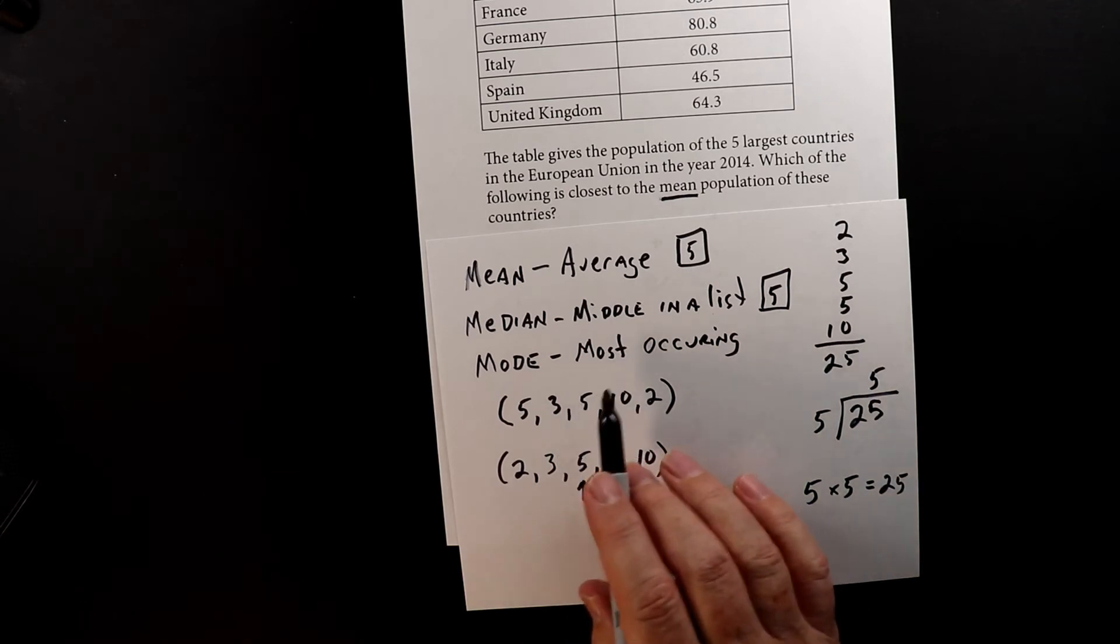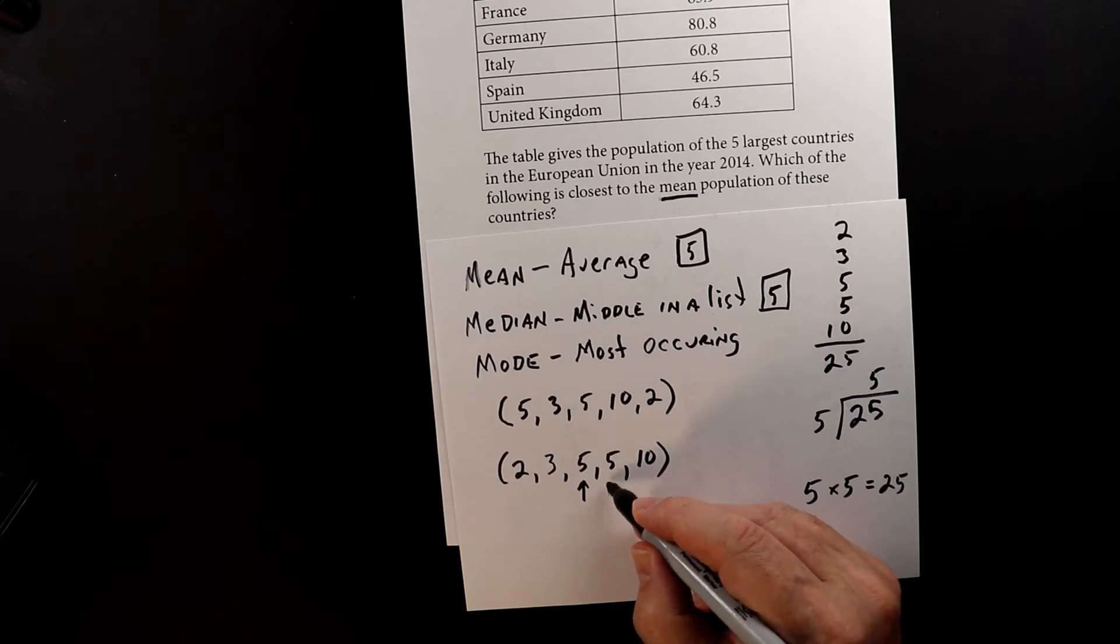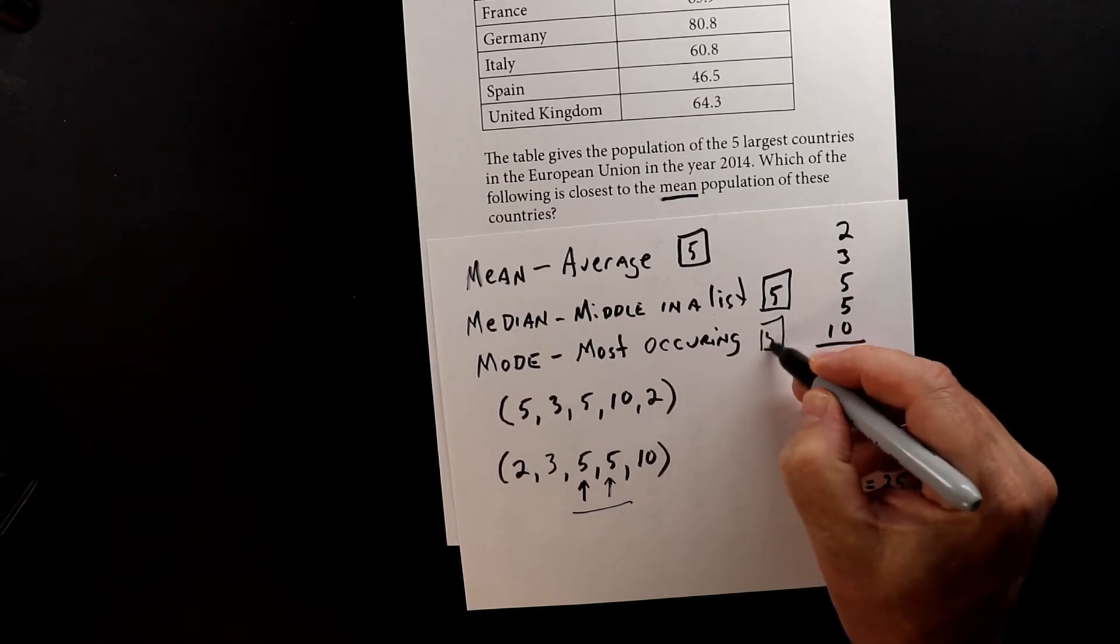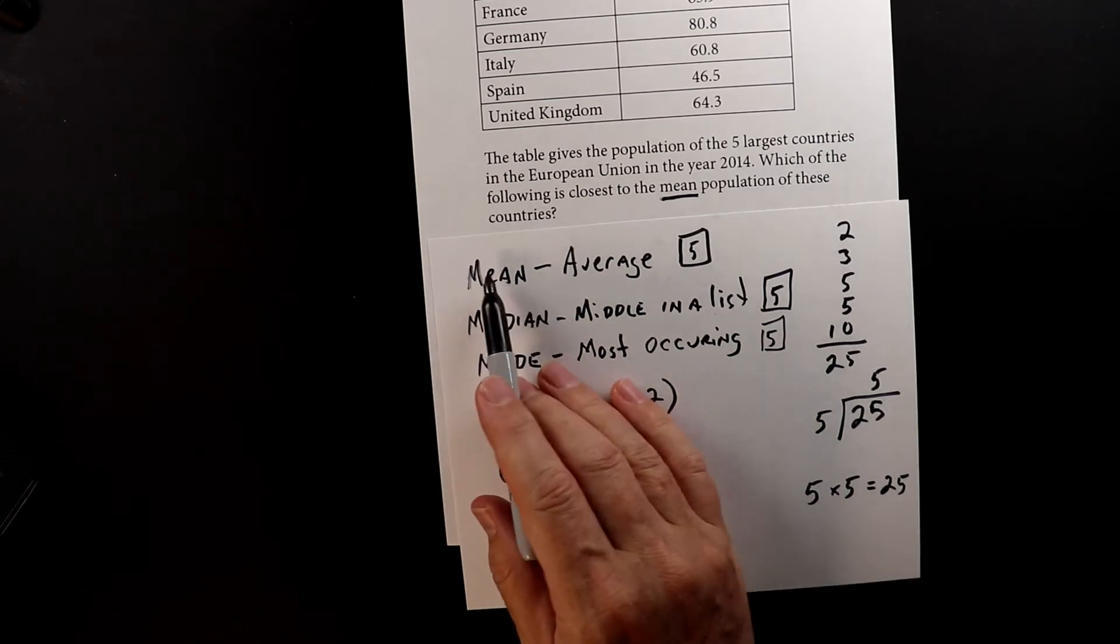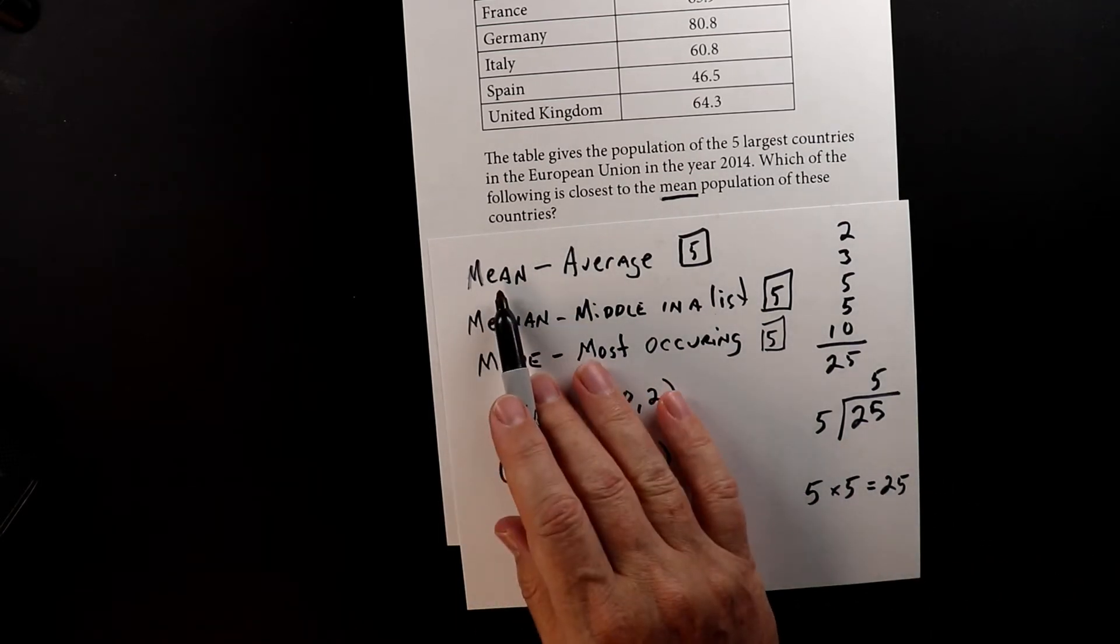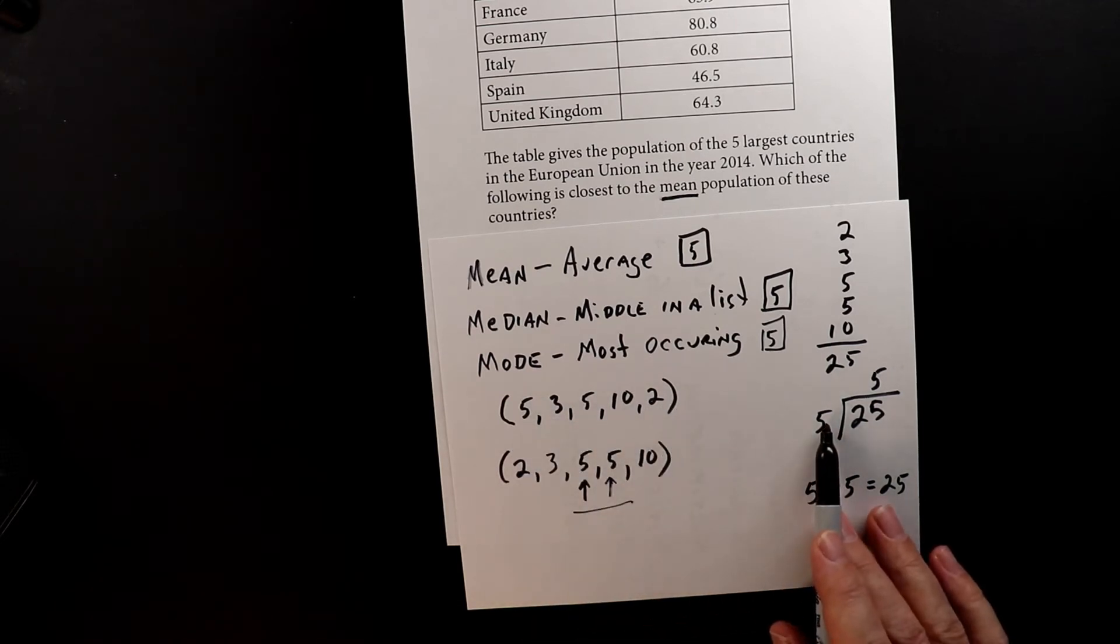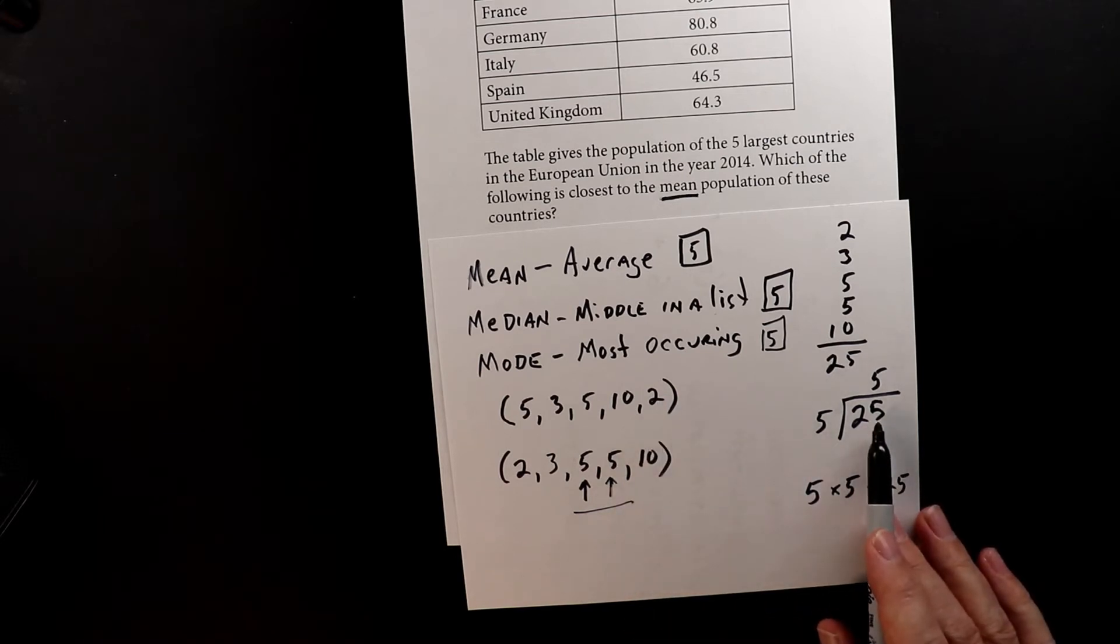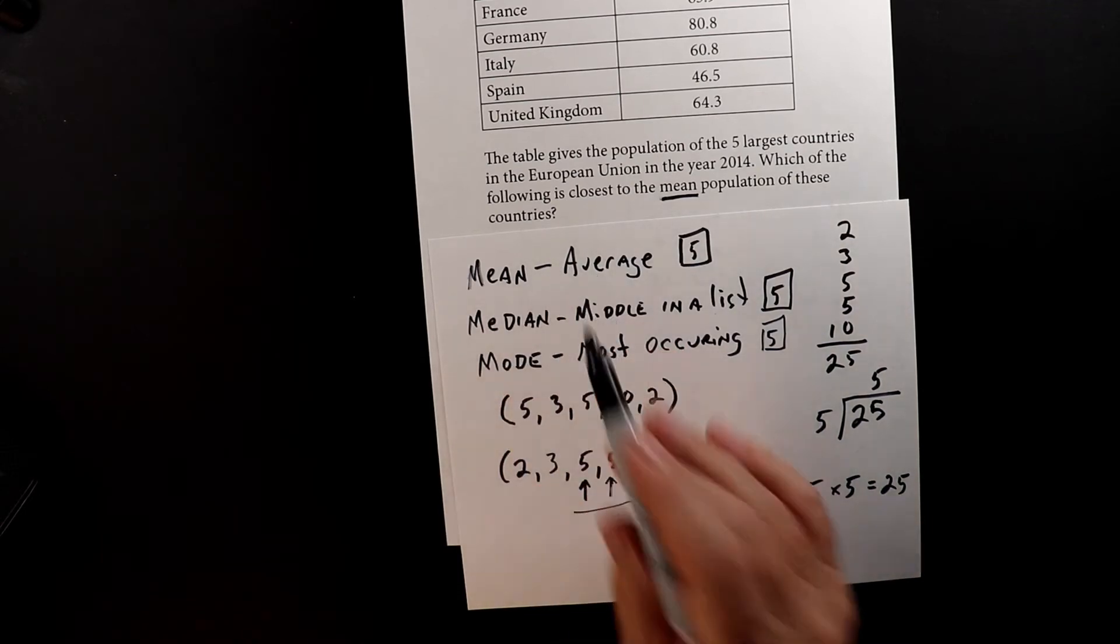And then the last one, we look at the list and we see which number occurs the most. So we have two fives in there, and five is the mode. So that's our review of mean, median, and mode. So we're going to focus on the mean, which is adding up all the elements and then dividing by the number of elements. So we had five elements, we added them up, we got 25, we divided it by five, and we got five. So that's how we find the mean, or the average.